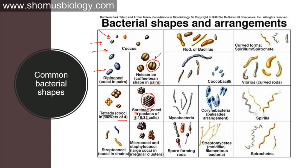We have streptococci where multiple cocci link together like a chain, and staphylococci where many spherical cocci stick together like a bunch of grapes. Strepto refers to a single chain of cocci, while staphylo refers to a stacked, grape-like cluster arrangement.